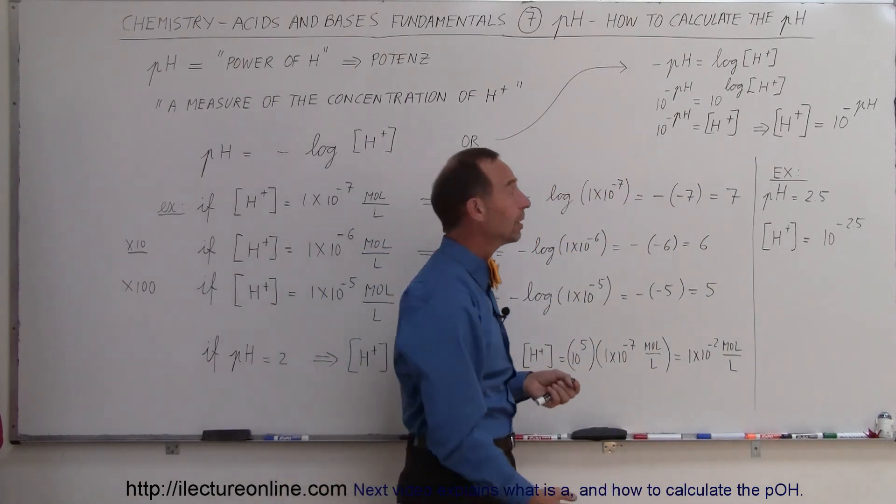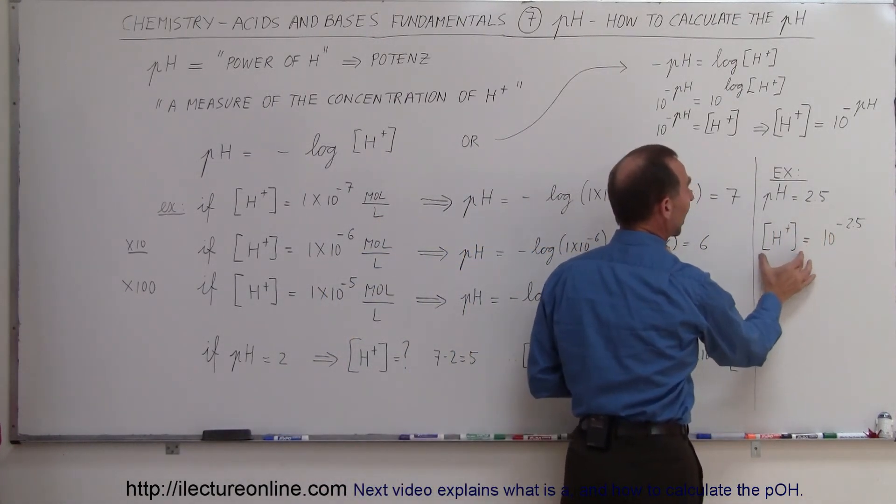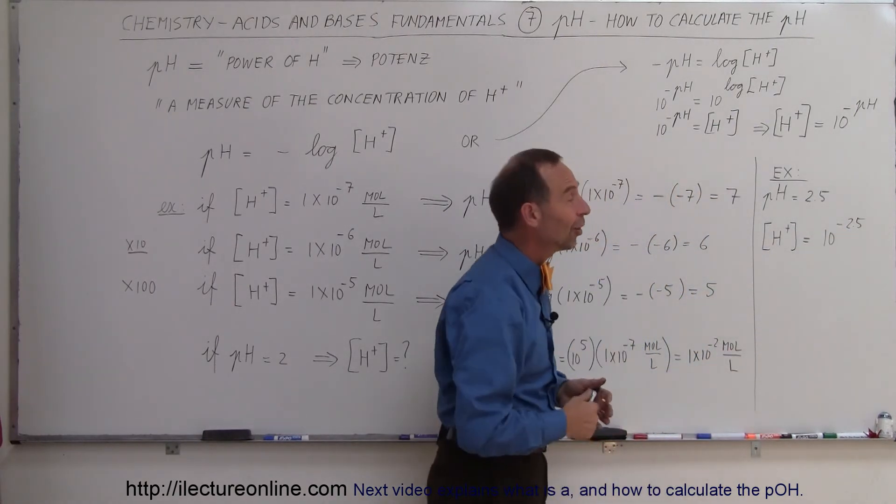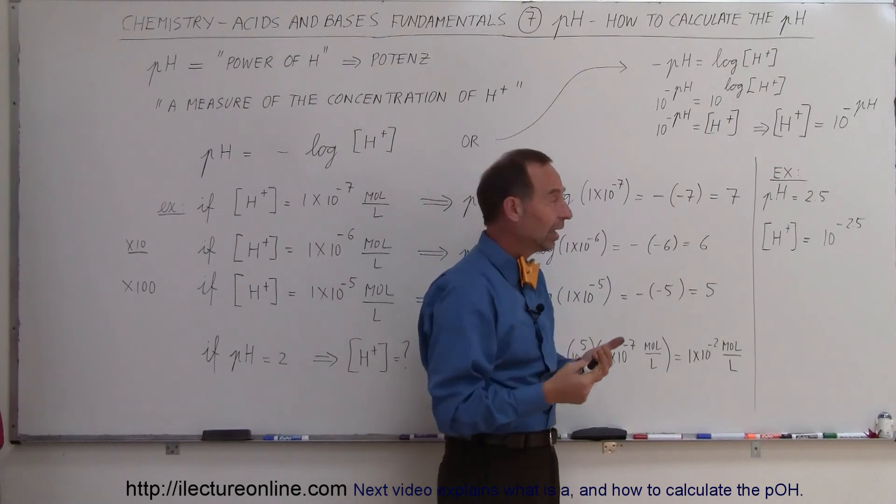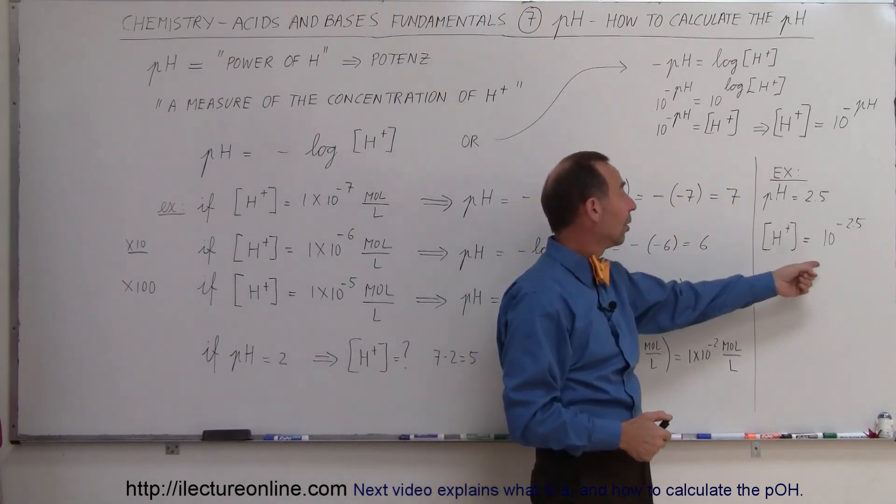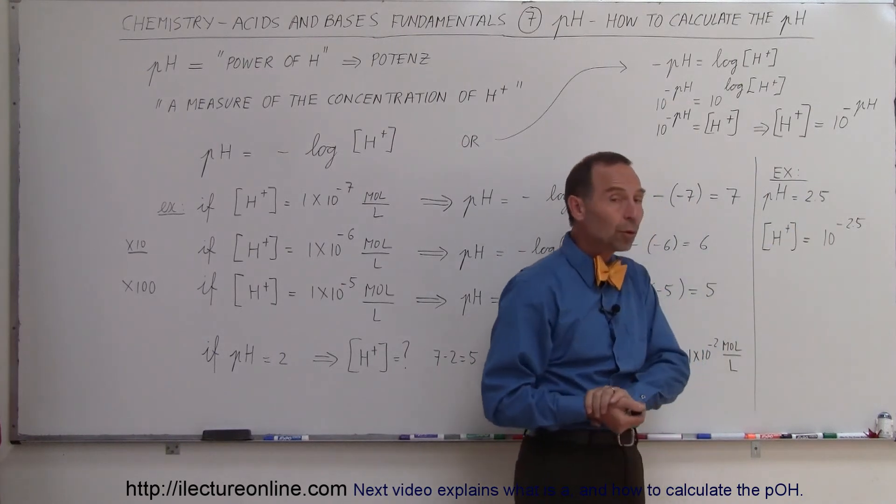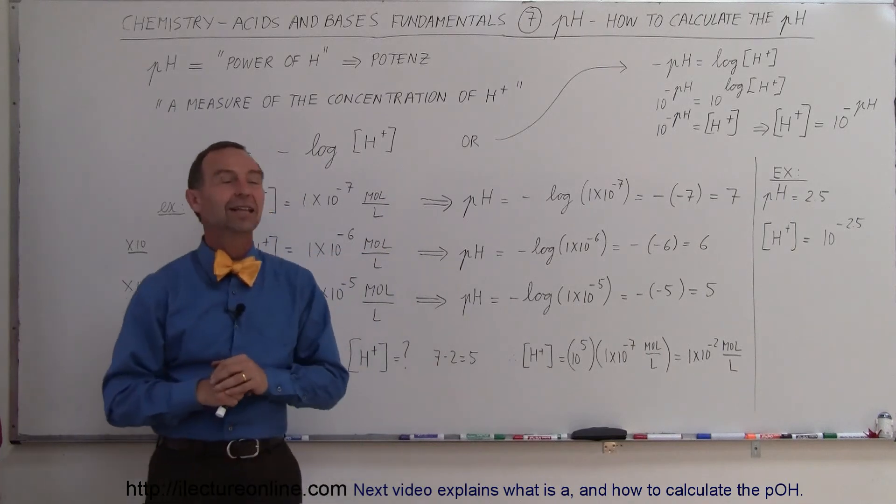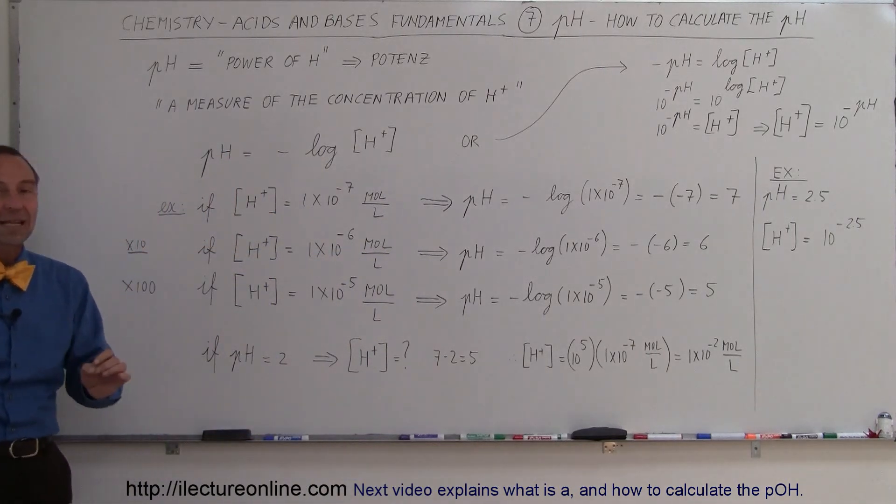So for example, if the pH is 2.5, then the concentration of the hydrogen ion is 10 to the minus 2.5. Pretty straightforward. So anytime you now see the pH and you want to know the concentration of the hydrogen ion in the solution, all you do is raise that to the negative exponent of the number 10, and you know the concentration of the hydrogen ion in that solution. And that's the meaning, the definition of the pH of a solution.